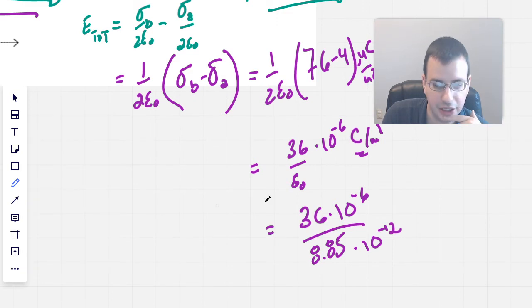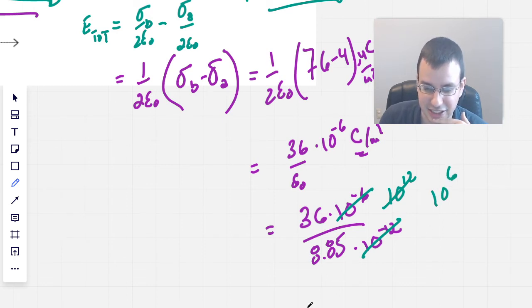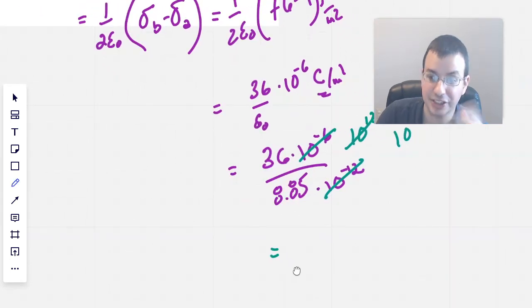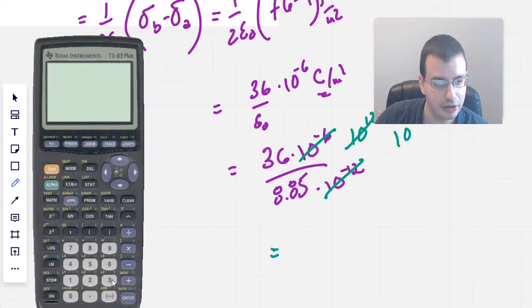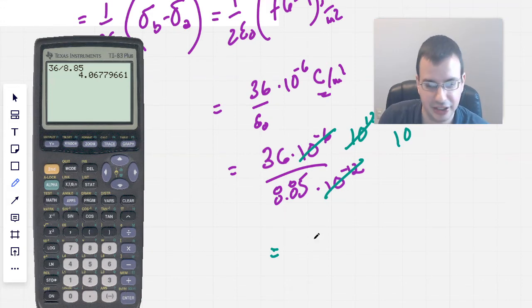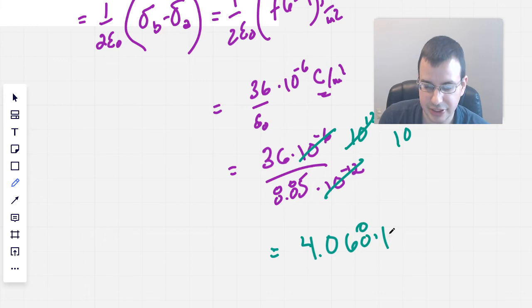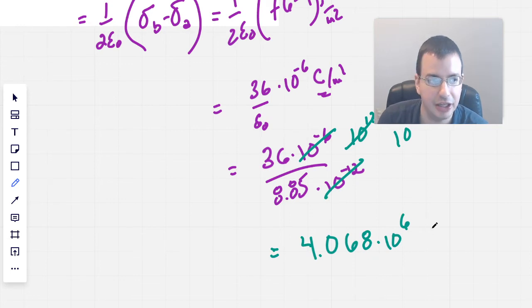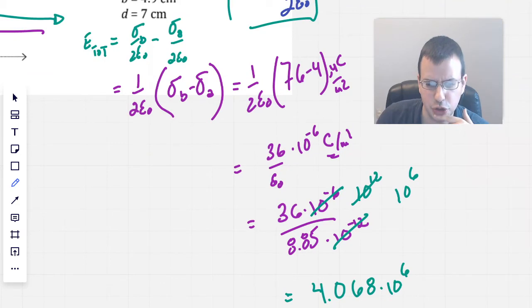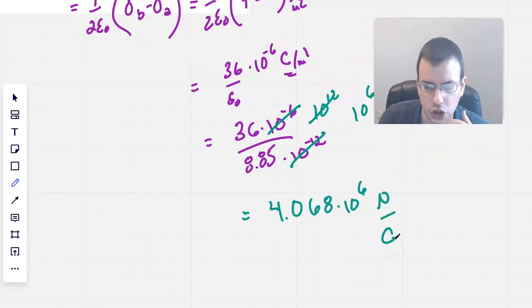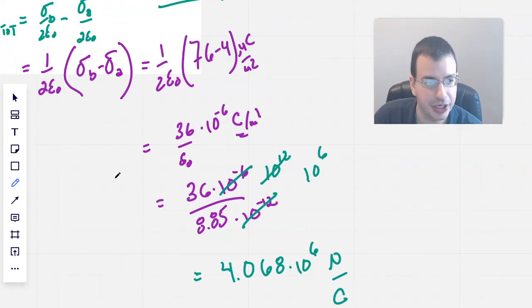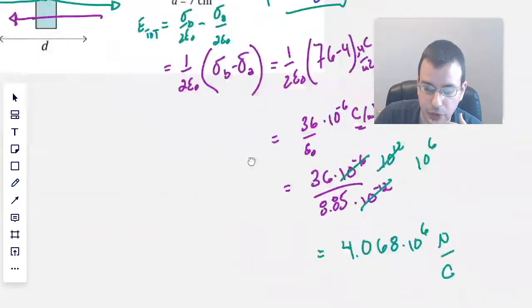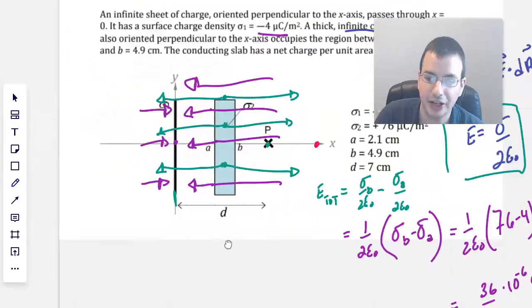Doing a little bit of algebra here, this is the same as 10 to the 12th on the top. 10 to the minus 6, and 10 to the 12th become 10 to the 6th. And so we are left with 36 divided by 8.85. 36 divided by 8.85, and we have 4.068 times 10 to the 6th, and this would be measured in, since we're doing electric field, I think newtons per coulomb. So from here the answer for the first point is the electric field at point P will be 4.068 times 10 to the 6th newtons per coulomb in the positive x direction.